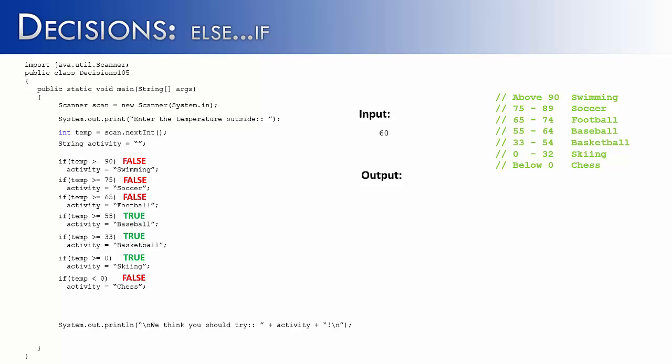It would get to baseball, which is what we should be suggesting, but then it would also be true for basketball and skiing, and the output would again be, we think you should try skiing. What we really want is, for the first time it finds a true statement, for the code to stop there.